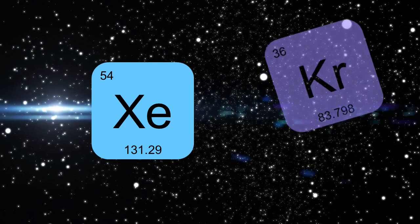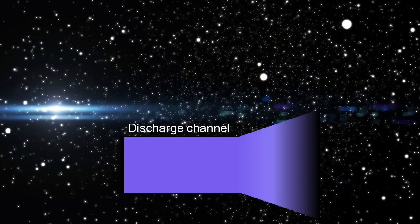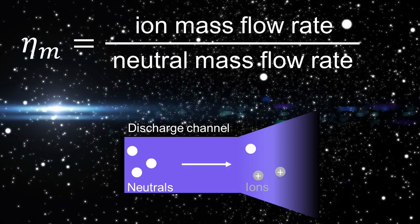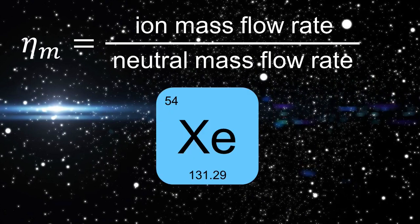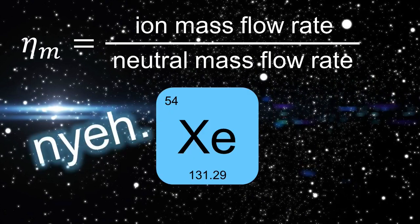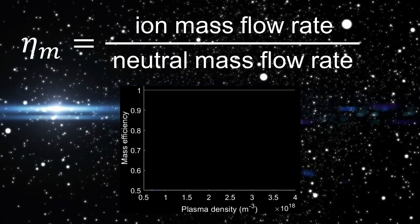Krypton's efficiency is usually worse because it's lighter than xenon and harder to ionize. This means its mass utilization—how easily it can turn neutrals into ions—isn't quite as good as xenon's. We can improve mass utilization by increasing voltage or current, which is true for both gases, but xenon thinks it's so good that it's got nowhere left to go. Whatever. Mass utilization gets better with higher plasma density.